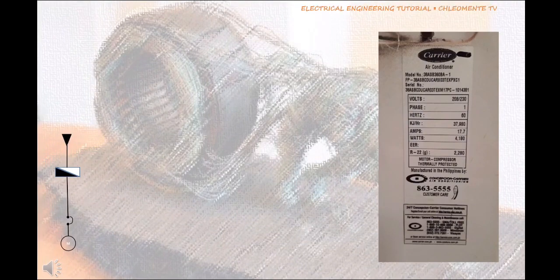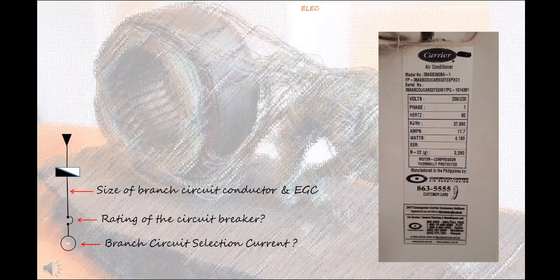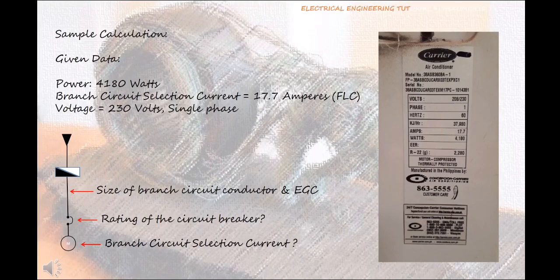In this given air conditioning unit, we will show how branch circuit selection current is determined, how to properly size the rating of the circuit breaker, and how you determine the proper size of the branch circuit conductor and equipment grounding conductor or EGC. Following are the given data: Power rating equals 4180 watts, voltage equals 230 volts single phase, branch circuit selection current equals 17.7 amperes. If this branch circuit selection current of 17.7 amperes is not available or there is no technical data sheet, we can refer to PEC 2017 Table 4.30.14.2 for single phase motor and Table 4.30.14.4 for three phase motor for the entire calculation. Now we can start the calculation.